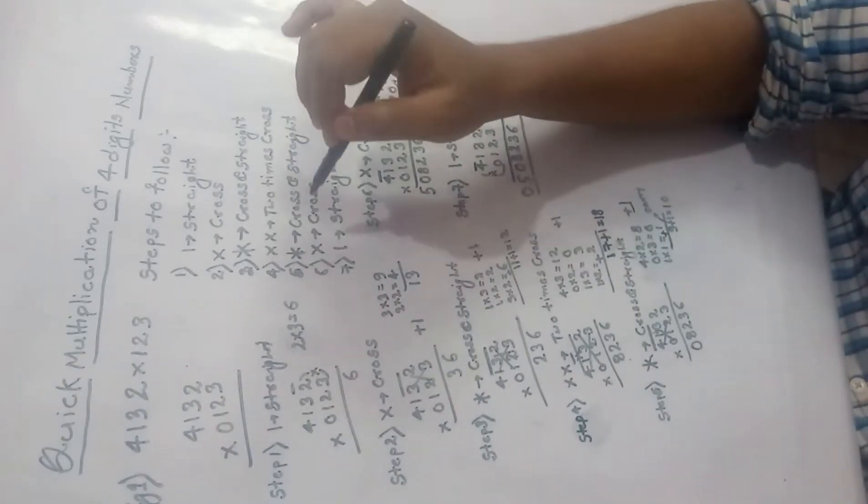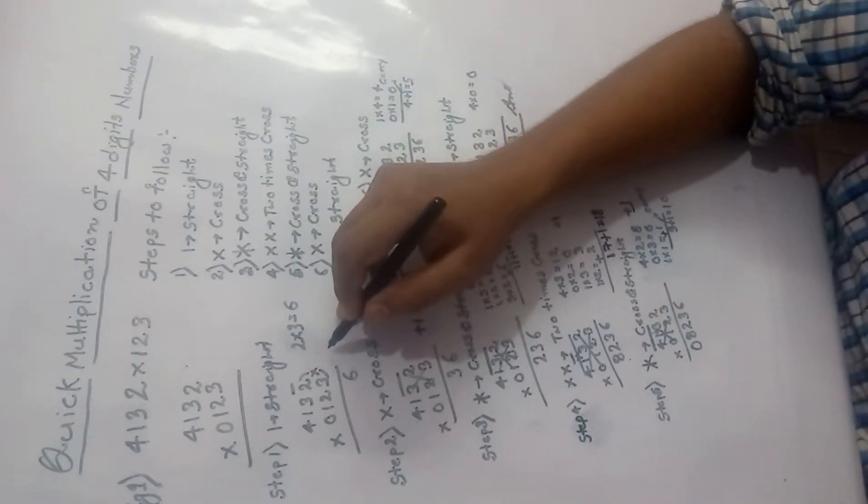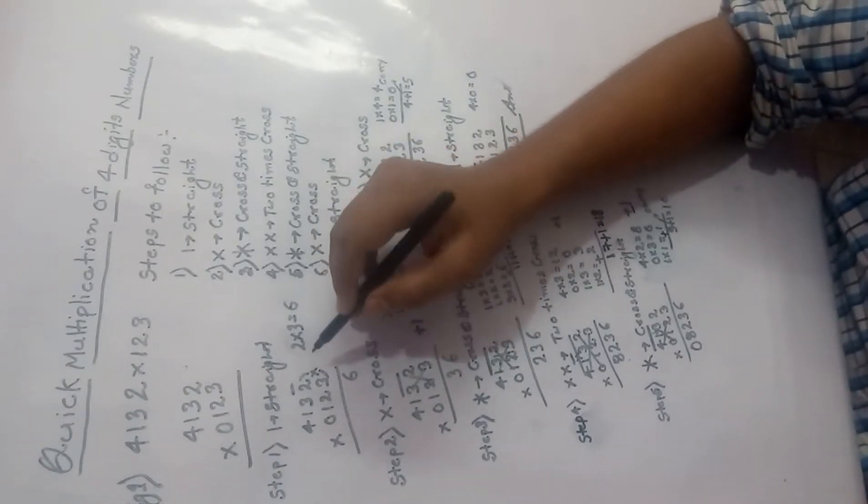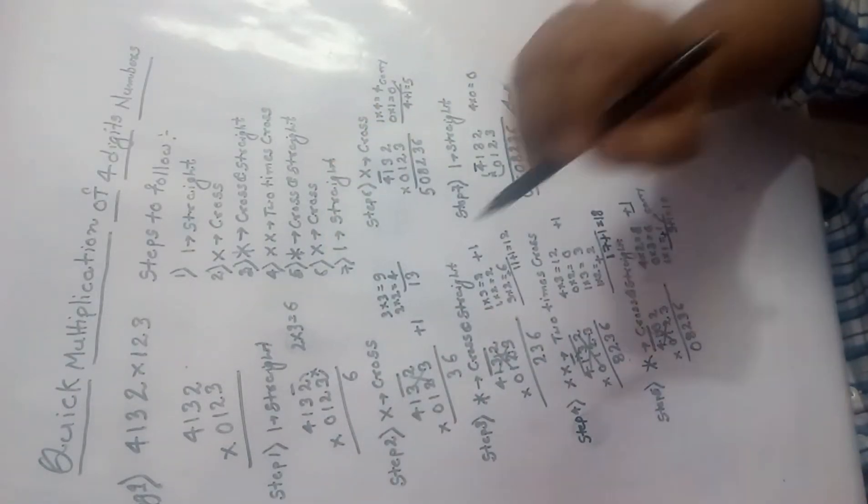So now I am going to apply these steps in this multiplication process. So first one is 4132 that has to multiply with 0123. So 2 into 3 is 6, right 6.